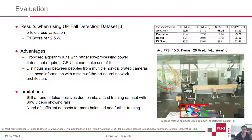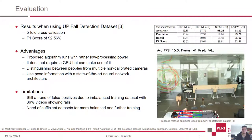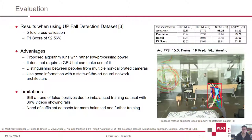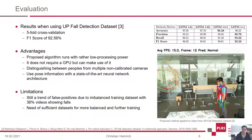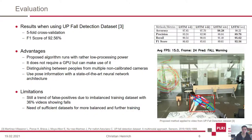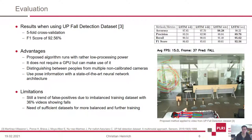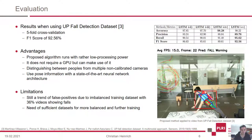Still, there are some limitations observed. It has a trend of false positives due to imbalanced training data. The training data contains 36% videos showing falls. This is simply not realistic and contrary to falls' rare occurrence in real life. There is a need for more sufficient datasets for further training.